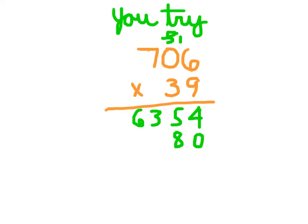3 times 0, which is 0, plus 1, which is 1. And 3 times 7, which is 21. Check that second part of your product there.